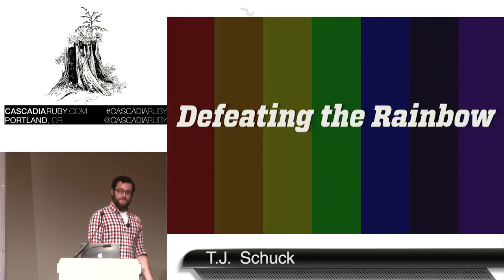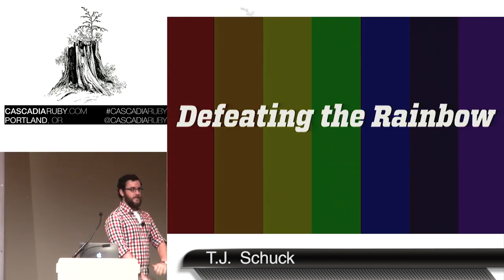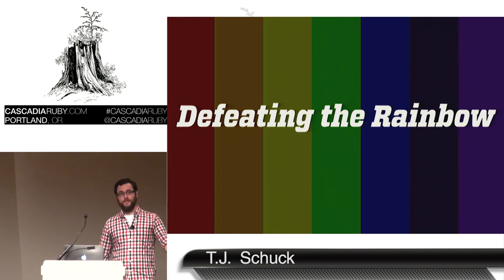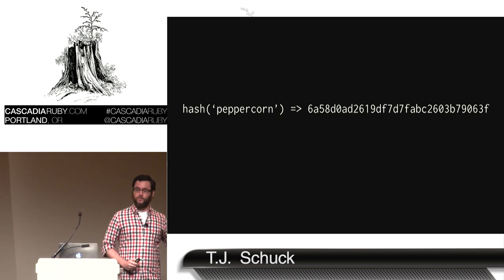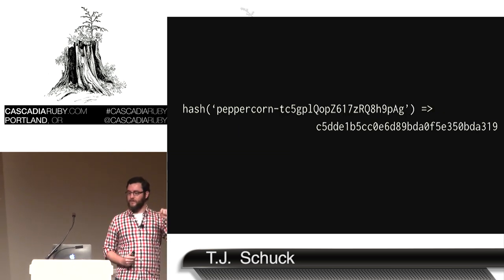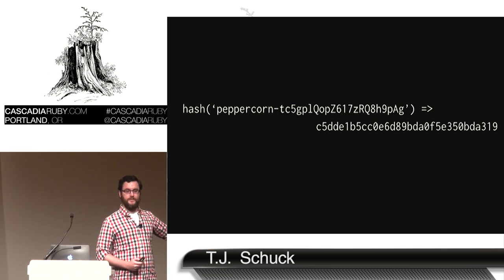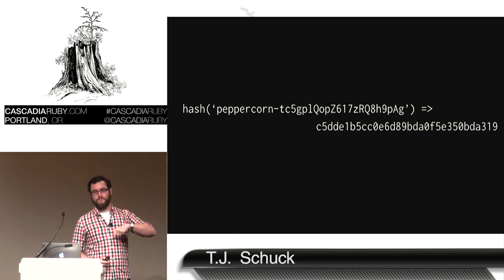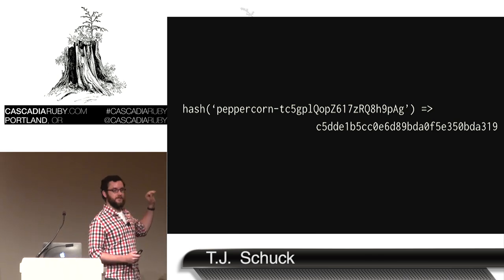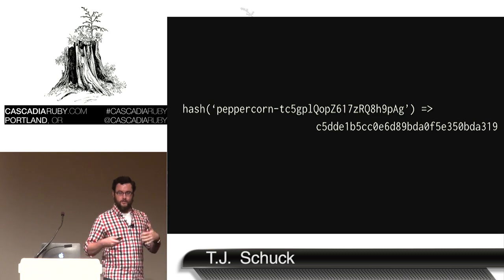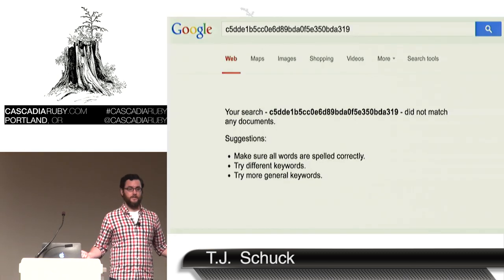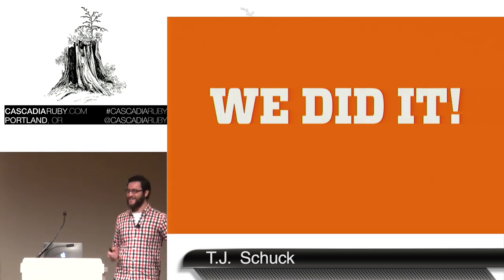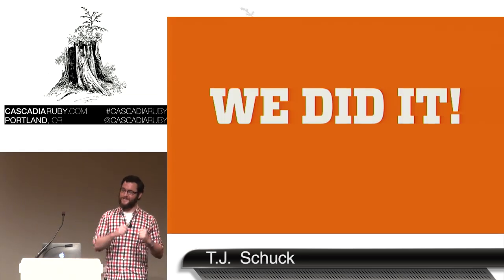We need some way to render all of these precomputed tables obsolete so you can't just Google a hash and see what it is. The easiest way is to just change all the inputs. We know that the hash of peppercorn is this value, but if we just append a string of nonsense to it, we get a different hash. In our app's password hashing method, we just say here's our app-wide string of nonsense, you append it all the time — and you check our lookup table, and there's nothing there. We did it.